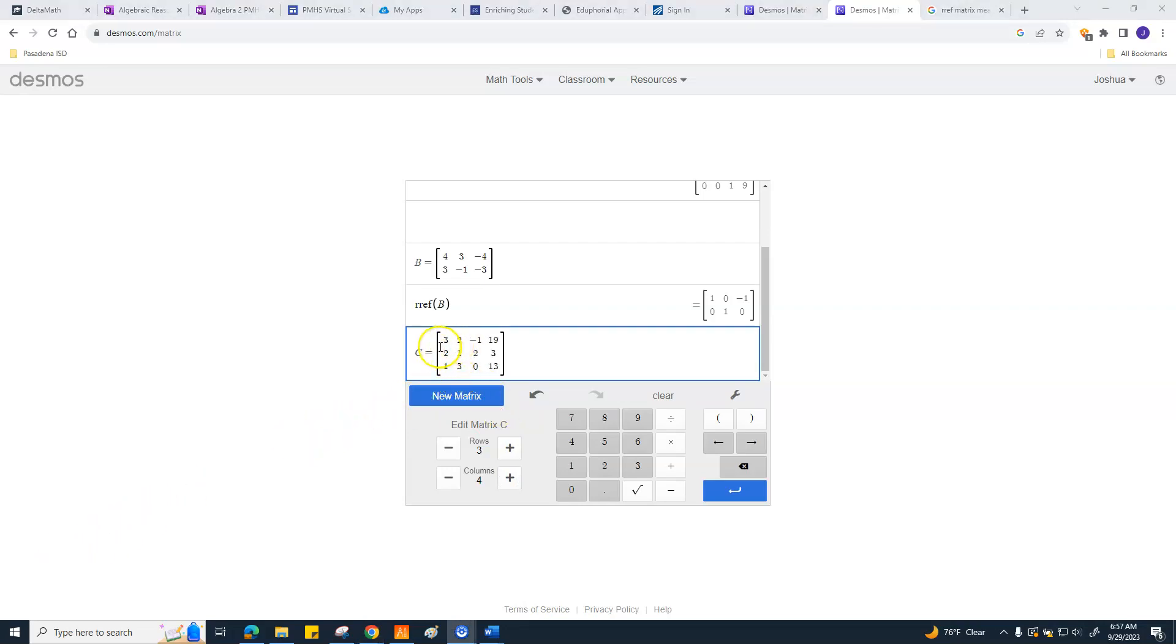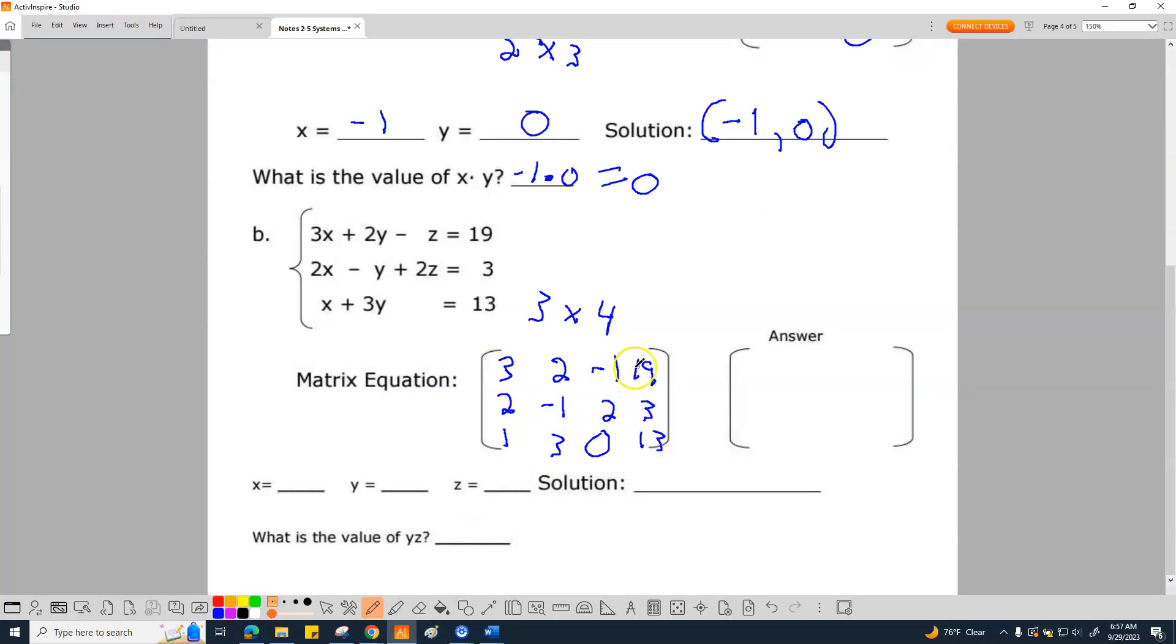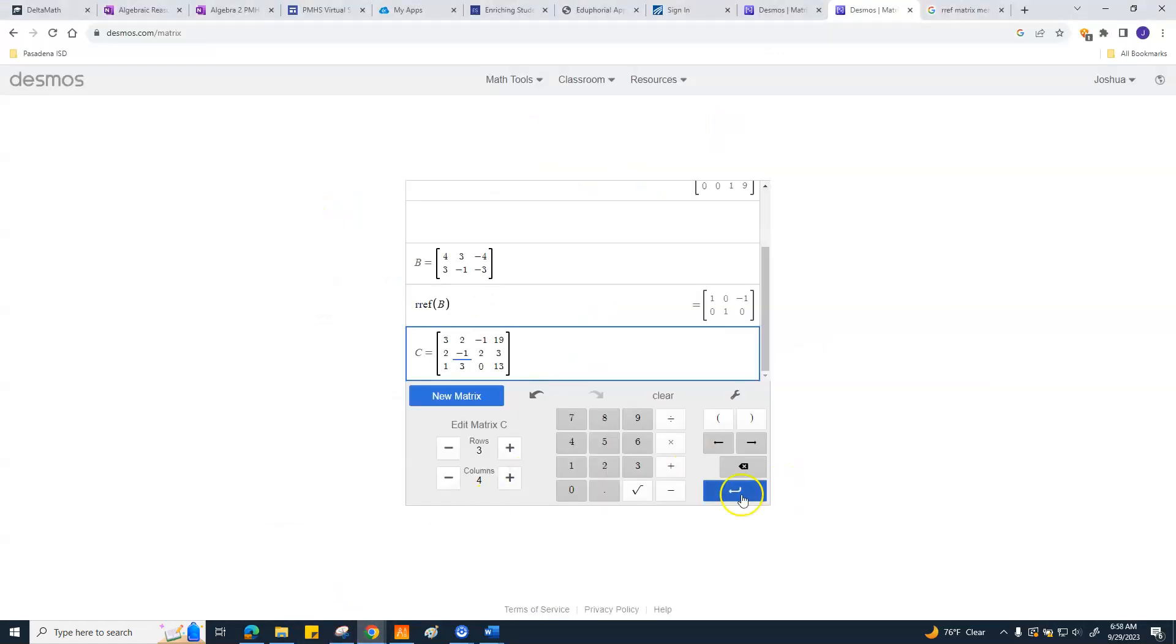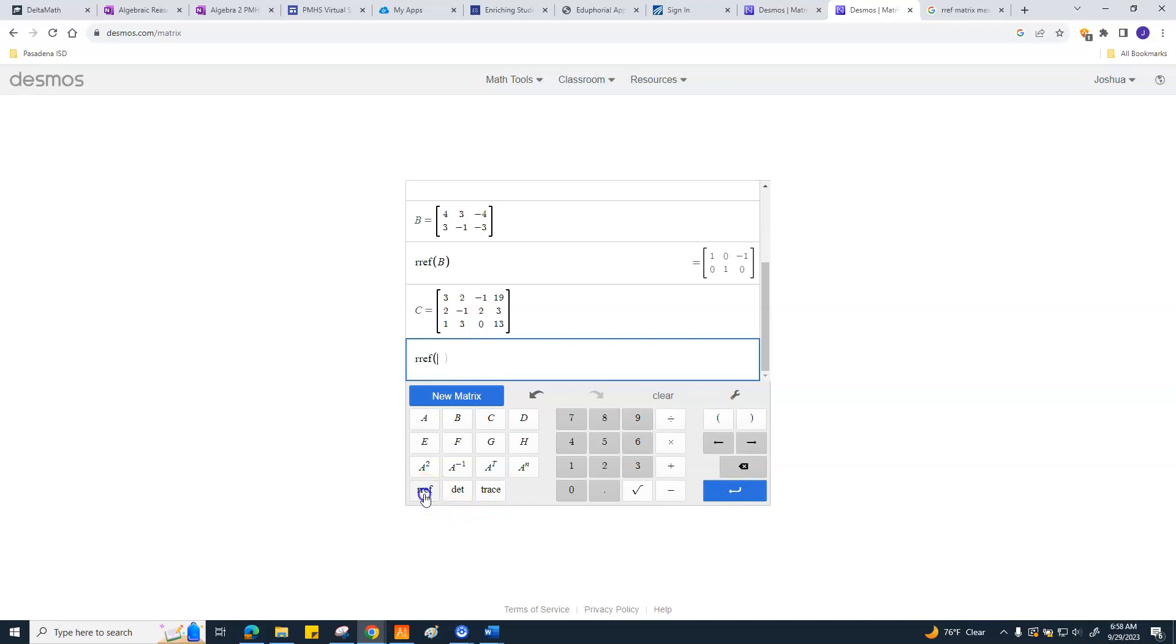All right. I have that put in. 3, 2, negative 1, 19. 2, oh, I made a mistake right here. Negative 1. Make sure you double check your work. 2, negative 1, 2, 3. Then I have 1, 3, and 0. And if you're wondering, it's from this stuff right here. So then we can go ahead and click enter. Hit our RREF button. Our matrix is C. Make sure you put that in there correctly. C. And then, bam, it gives us the answer, which is so freaking cool.